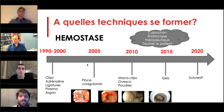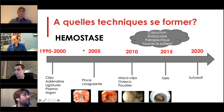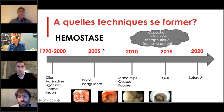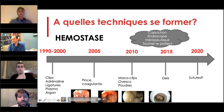Pour les gestes d'hémostase, c'est une technique sur laquelle il faut se former et se reformer car on a une explosion des outils industriels à notre disposition. Dans les années 90-2000, on avait juste les clips, un peu d'adrénaline et le plasma argon. Puis est arrivée la pince coagulante, les macro-clips Ovesco, les poudres, maintenant les gels et des systèmes de suture pour l'endoscopie bariatrique. Si on ne se forme pas à ces nouveaux outils, on ne les utilise pas et on fait une endoscopie qui ne correspond plus à l'état de l'art.